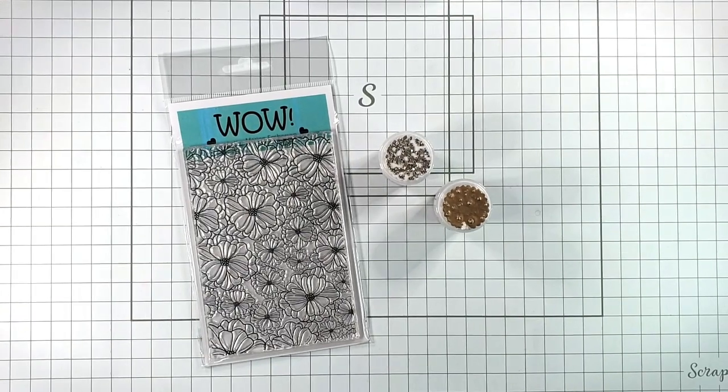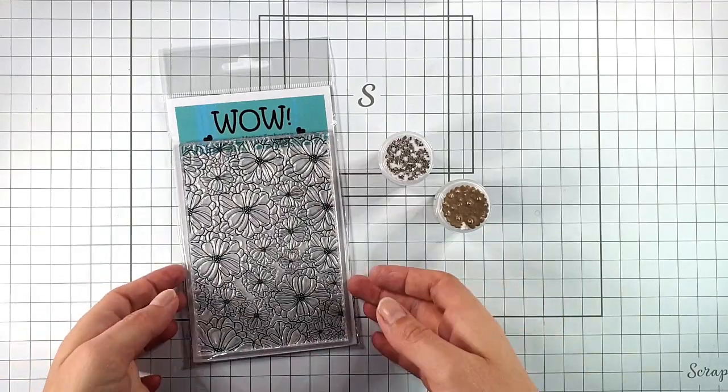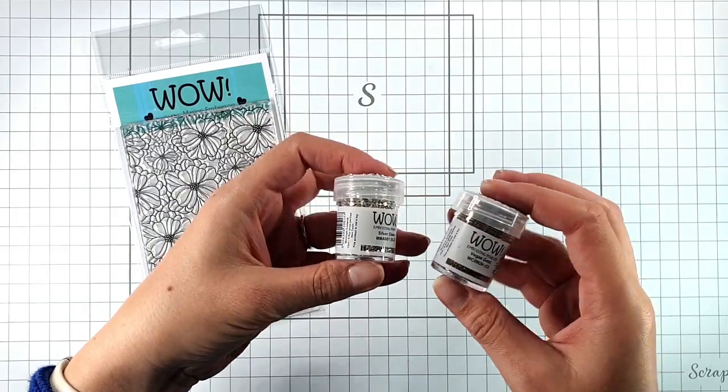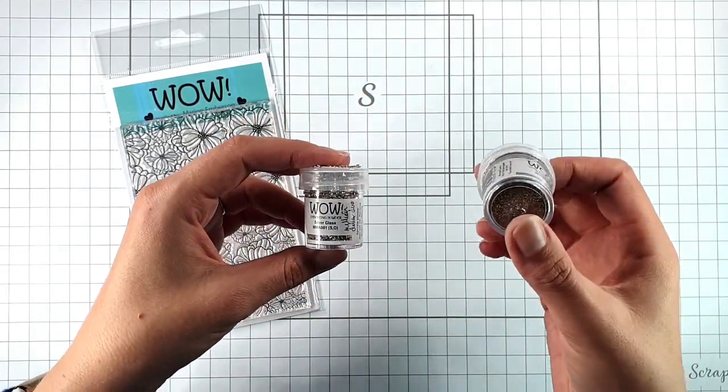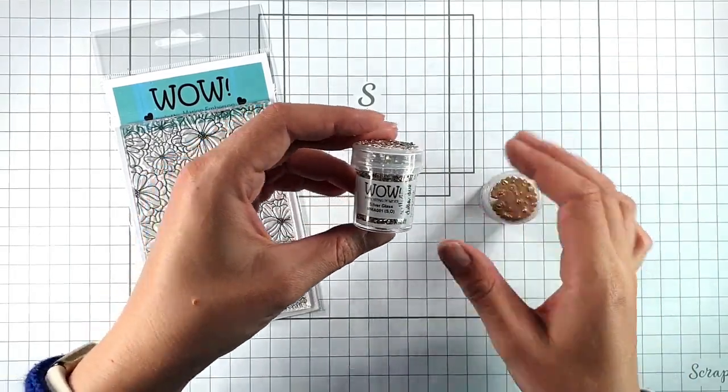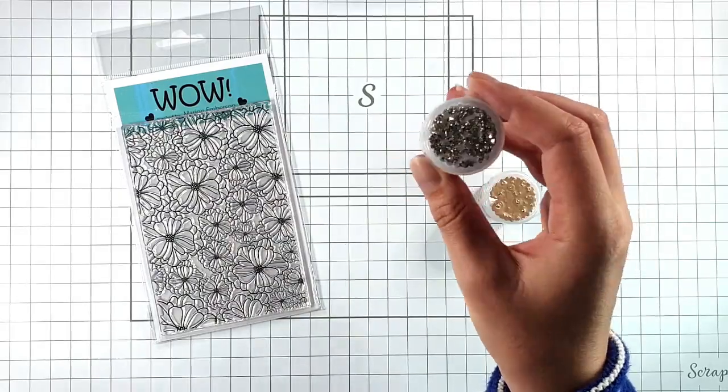Today I'm creating a fun watercolor card using this tropical stamp from WOW and these cool new powders. This is called the Million Dollar Duo, and it's made up of quite a coarse gold powder and this absolutely gorgeous silver glass additive.